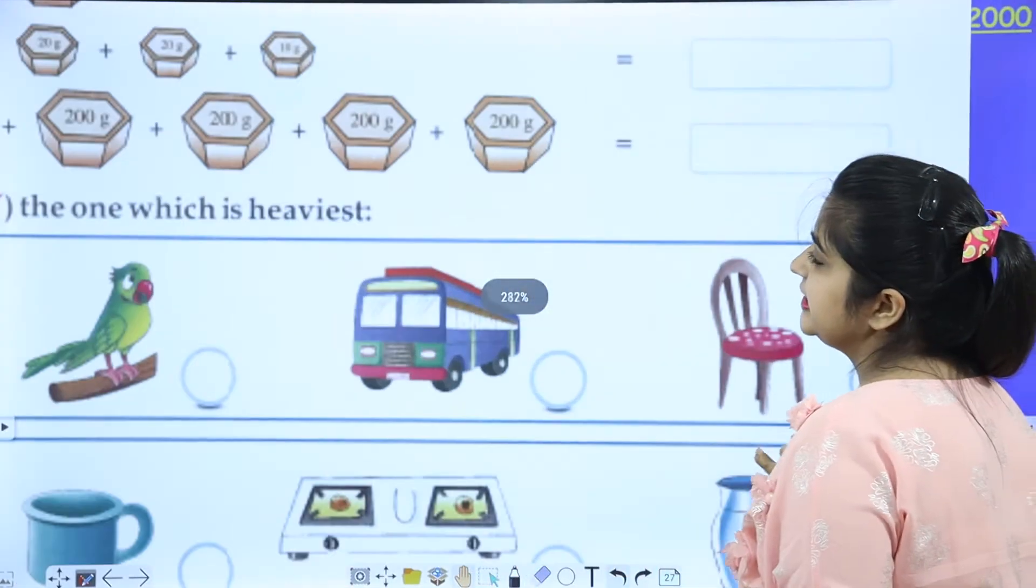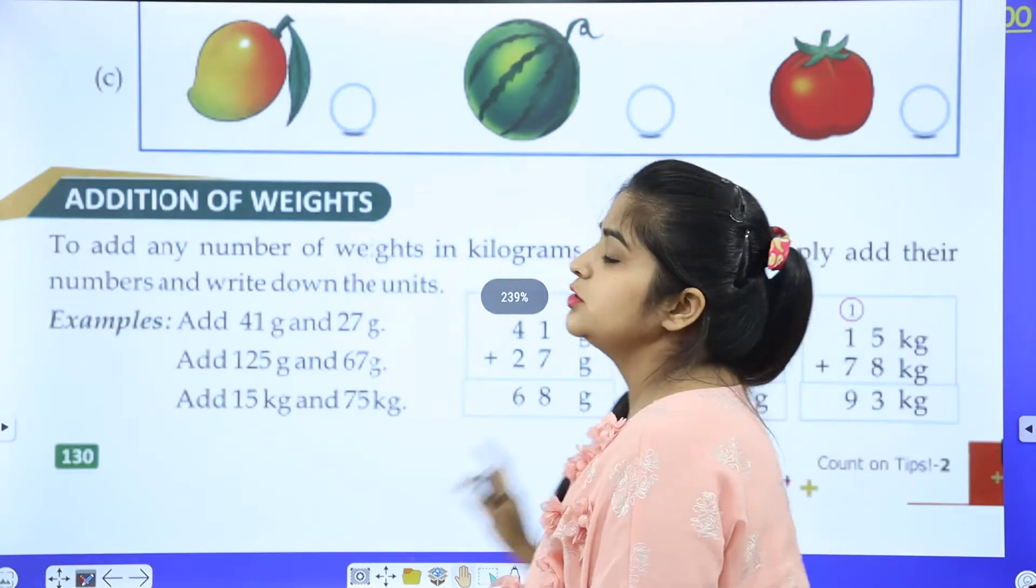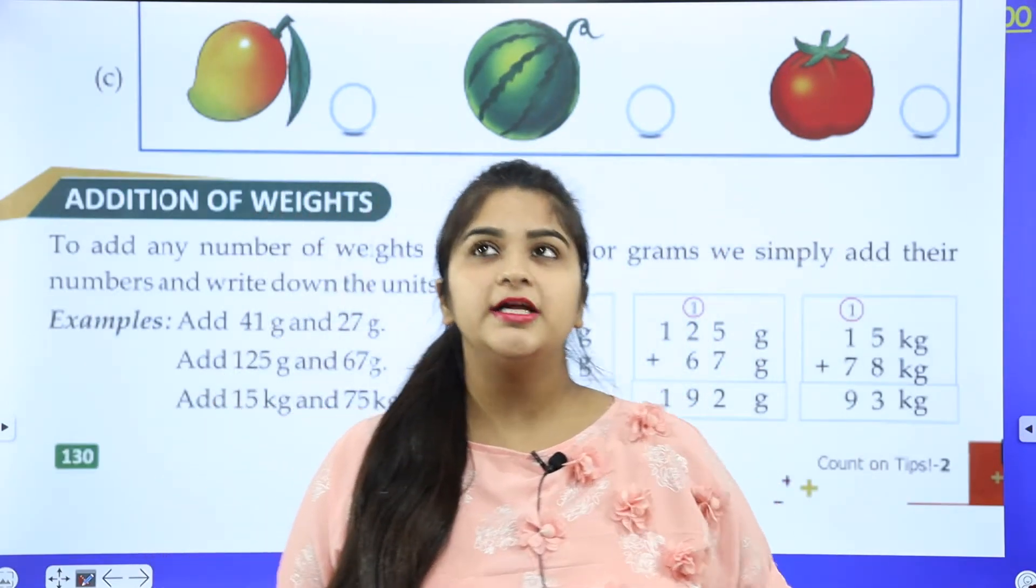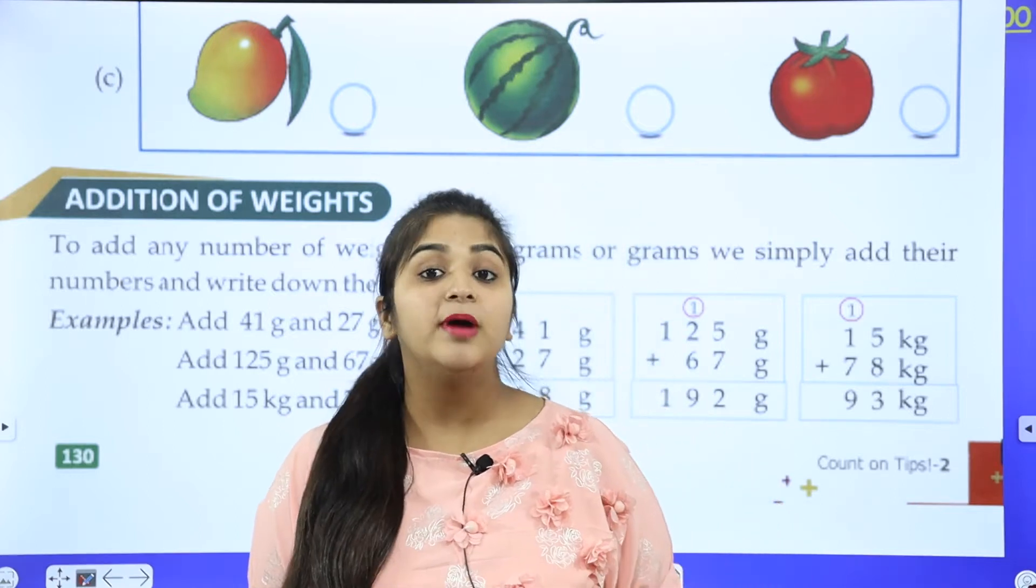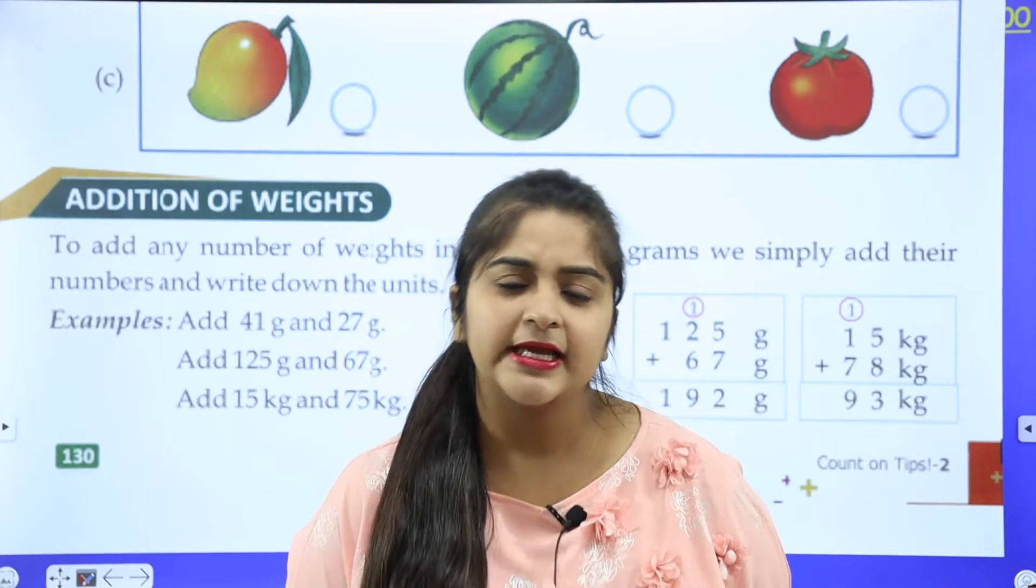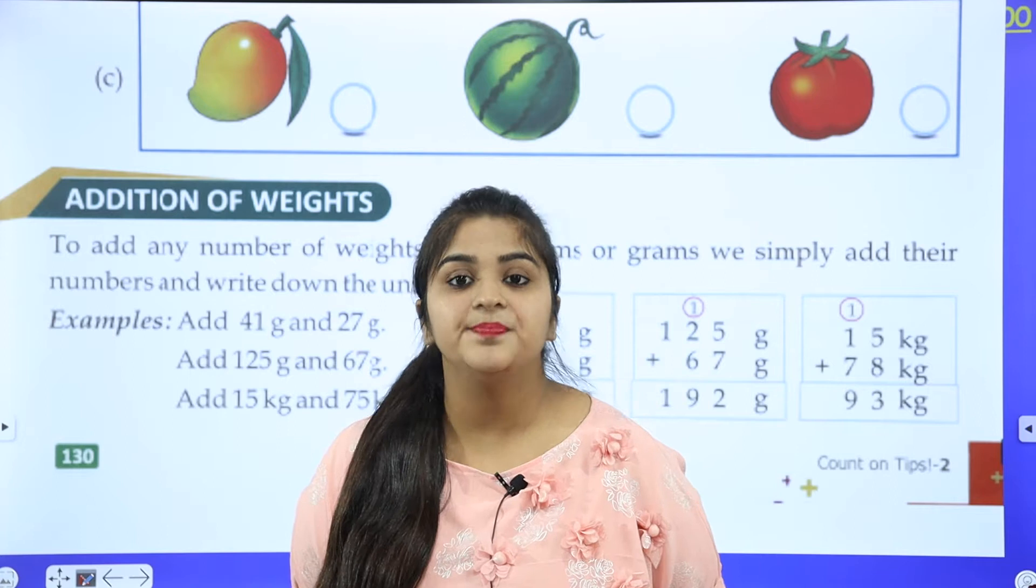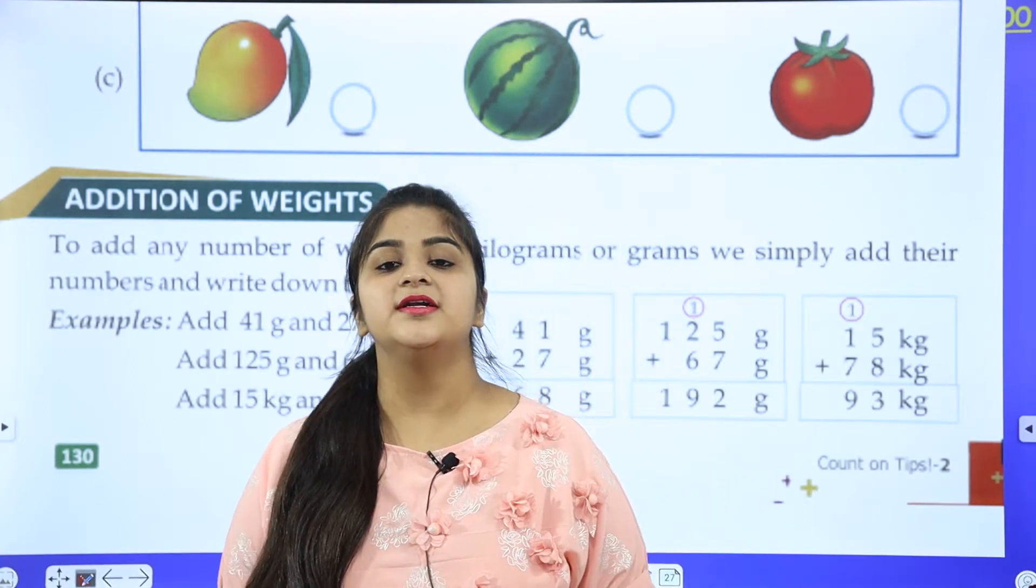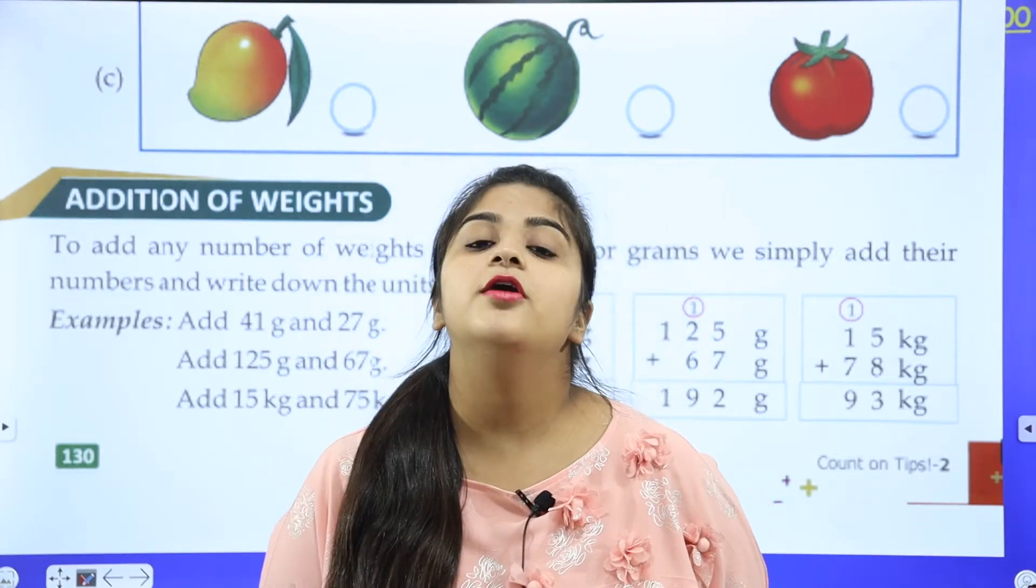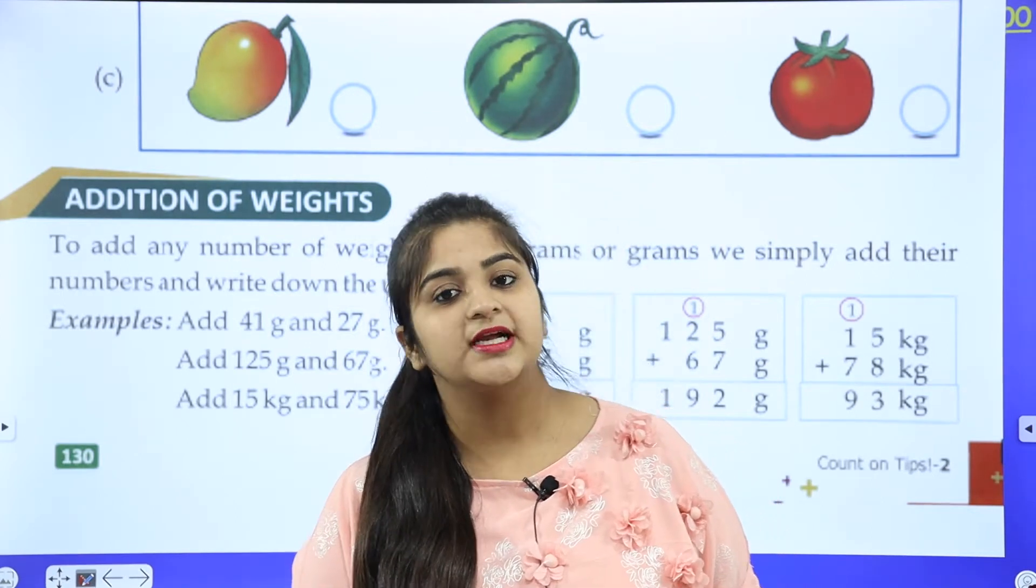So what did we do? We learned kilograms and grams. 1 kg is equal to 1000 grams. Let me tell you, if we want to measure heavy weight, we use kg. And if we want to measure light weight, we use grams. In 1 kg, how many grams? 1000 grams. This we did in the first class.